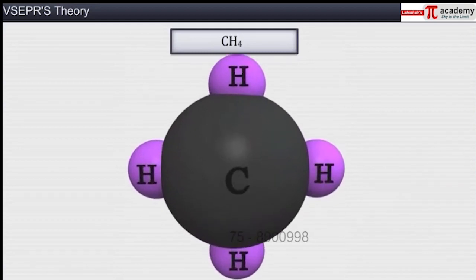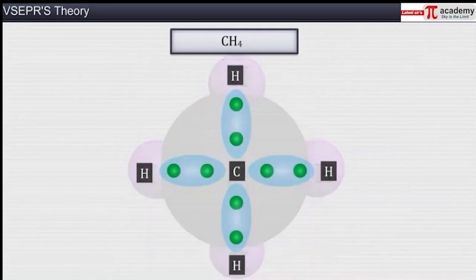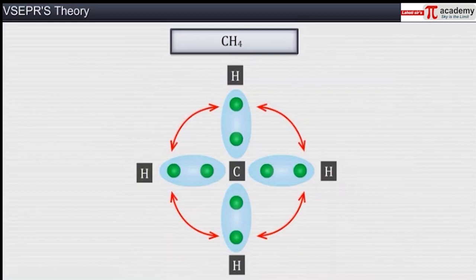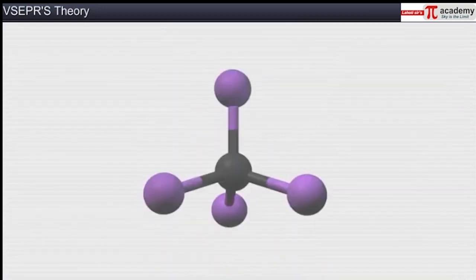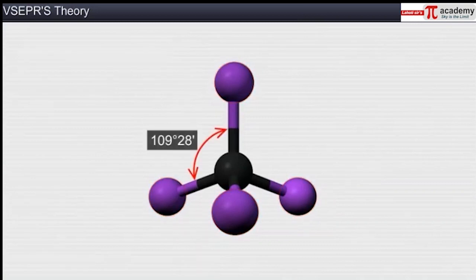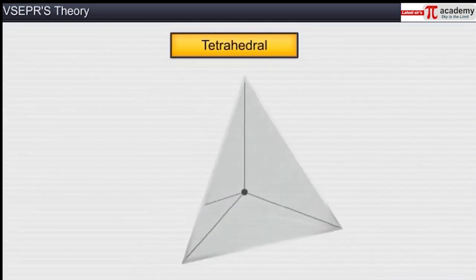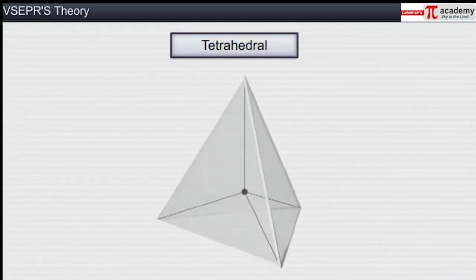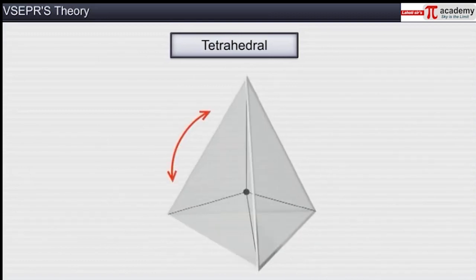In a methane molecule, four hydrogen atoms are bonded to one central carbon atom. Since the electron pairs have the same charge, they repel each other and try to stay as far away from each other as possible. As a result, all four hydrogen atoms arrange at the four corners of a tetrahedron, lying at equal distances from each other. Hence, methane has a tetrahedral shape, and in this tetrahedron the bond angle is 109 degrees 28 minutes.